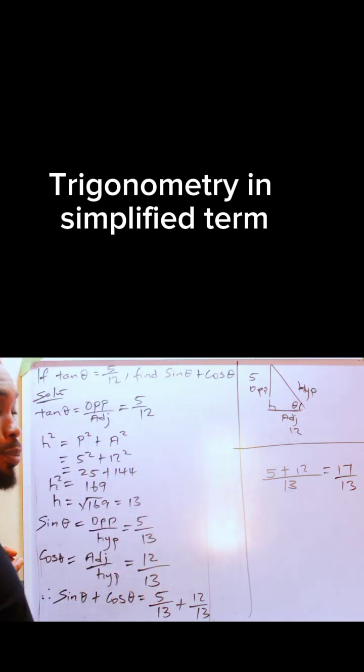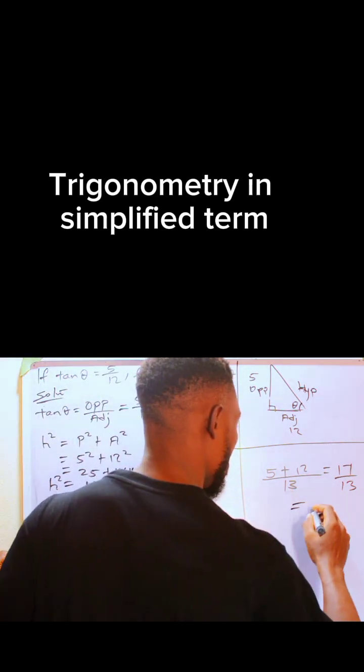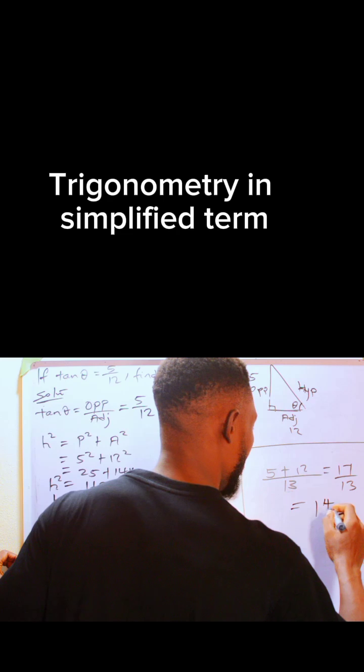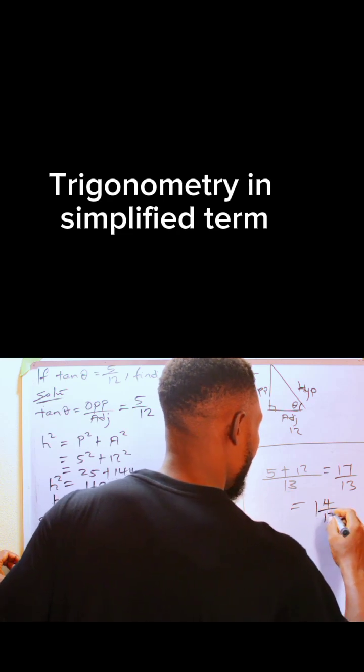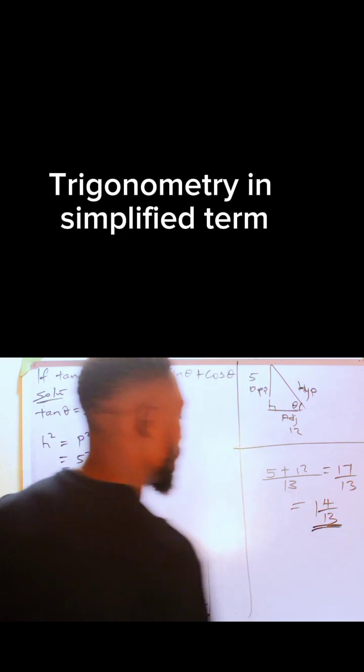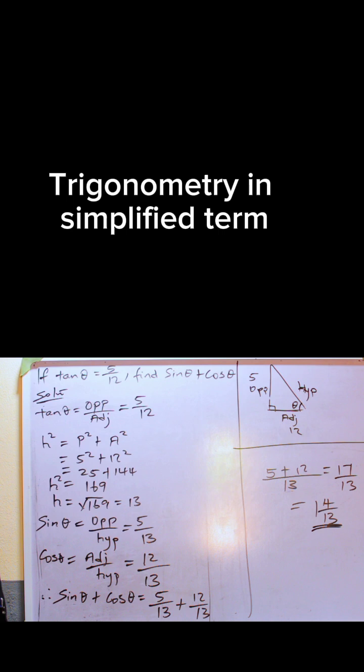This is an improper fraction. If we change it to a mixed fraction, it will give us 1 whole number 4 over 13, and this is our final answer. Thank you for watching. Please do subscribe to our channel, like, comment, and share.